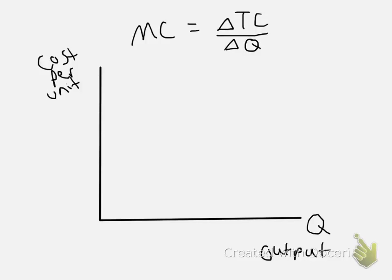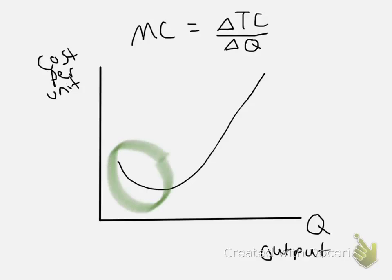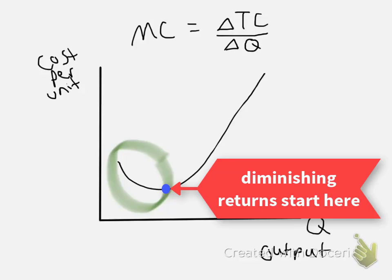The marginal cost curve has a shape that looks something like this. We don't have to have a downward-sloping area, but we know that at some point it's going to begin sloping upward due to diminishing returns. I'll label this curve MC for marginal cost.